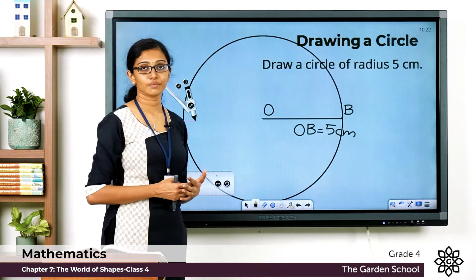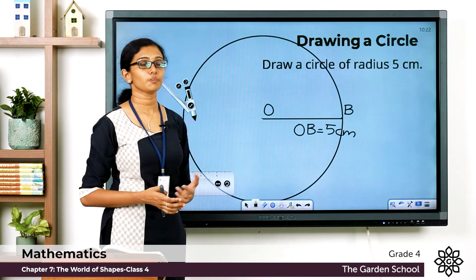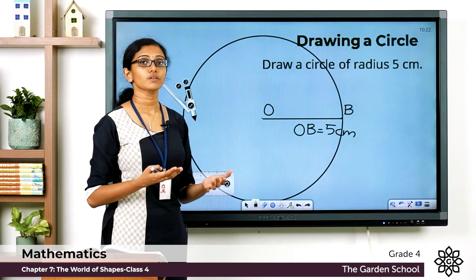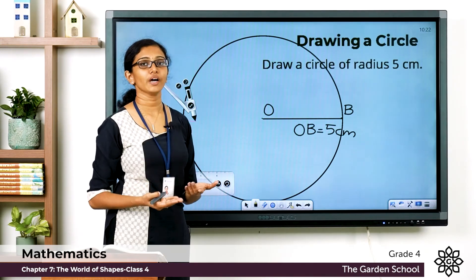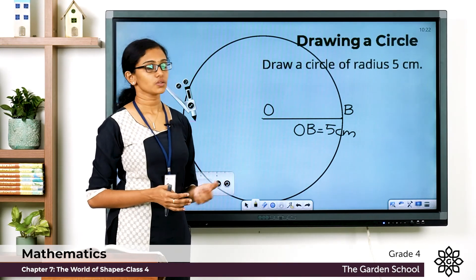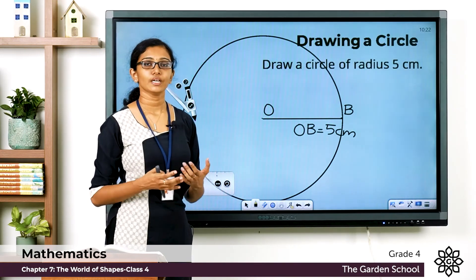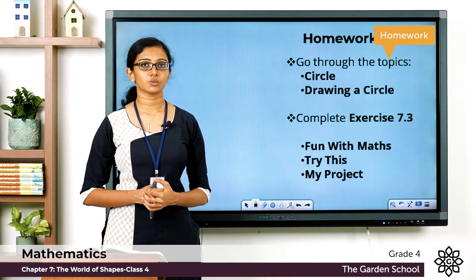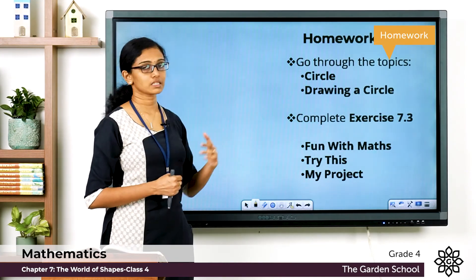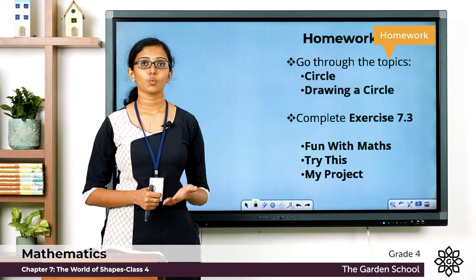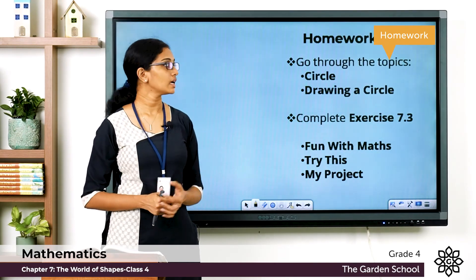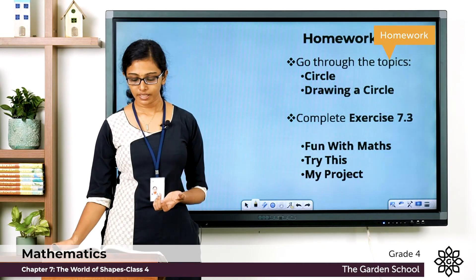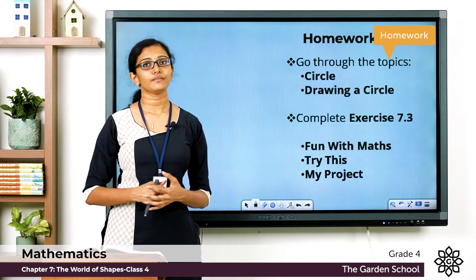If the radius is five centimeters, what would be the diameter? The diameter would be double the radius, or two times the radius. So the diameter would be five plus five, or two times five, which equals ten centimeters. You can try drawing circles of different radii in your notebook. As homework, go through the topic on circles and drawing a circle on pages 106 and 107 of your textbook. Then complete Exercise 7.3, questions 1, 2, 3, 4, and 5.